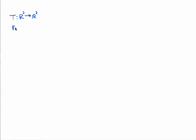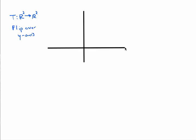Let's take a look at this particular example. This is a transformation that goes from R² to R², and I'm going to flip all of R² over the y-axis. Here's my y-axis, and there's my x-axis. Let's think about what happens to certain vectors as we move through this.